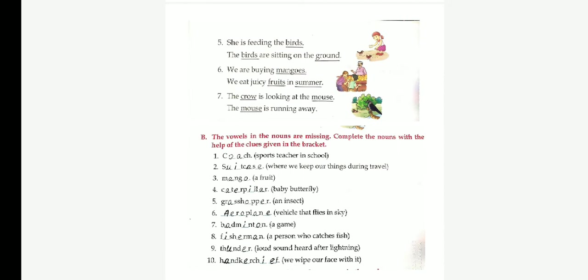Next one. A fruit. Mango. M-A-N-G-O. Baby butterfly. Answer: Caterpillar. C-A-T-E-R-P-I-L-L-A-R. Fifth one. An insect. Answer: Grasshopper. G-R-A-S-S-H-O-P-E-R. Sixth one. Vehicle that flies in the sky. Answer: Aeroplane. A-E-R-O-P-L-A-N-E.